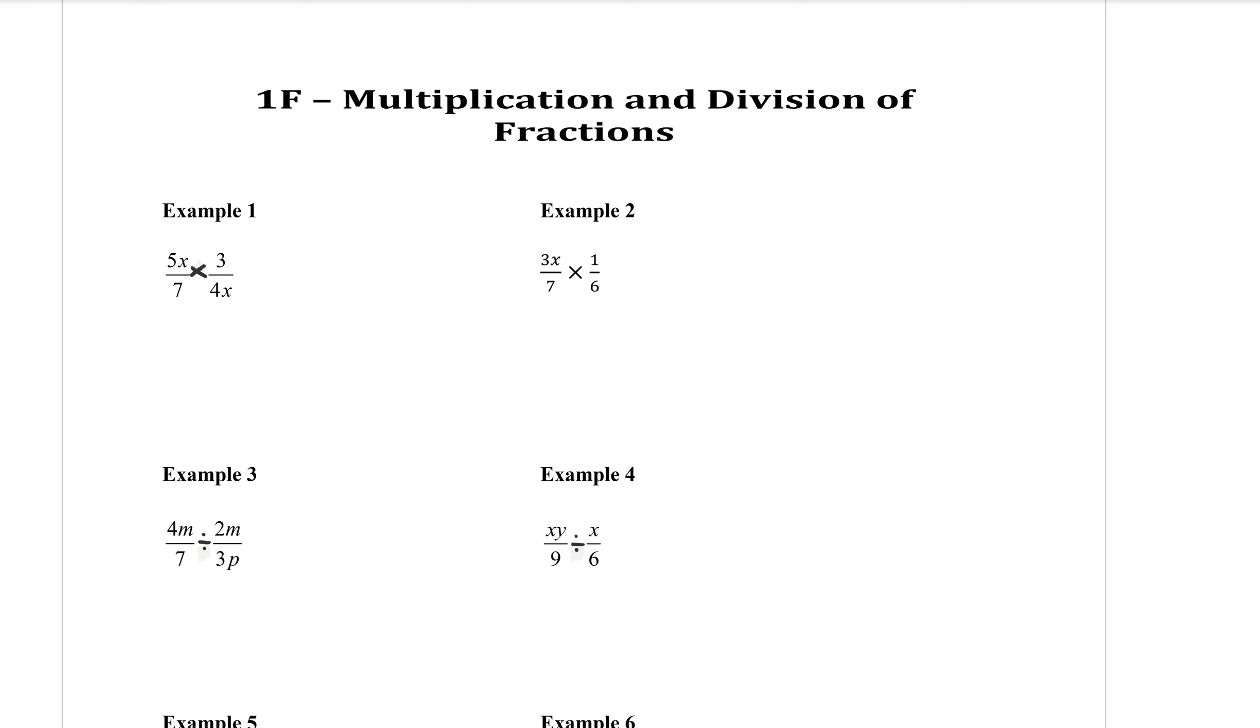Now, there are a couple of different strategies that you can use here. However, last year when you did these, you were always asked to cancel first. So we'll go with that strategy first. Canceling is if you can see anything on the top of any fraction that matches with anything on the bottom of any fraction, you can cancel them out.